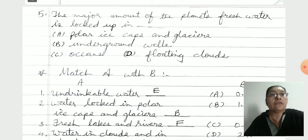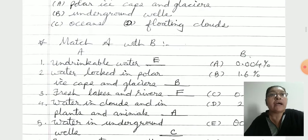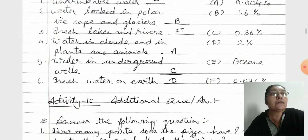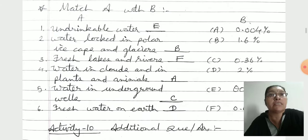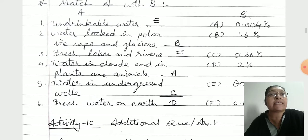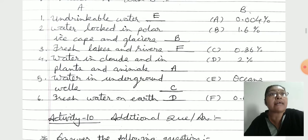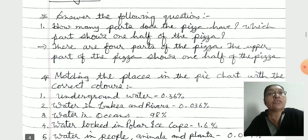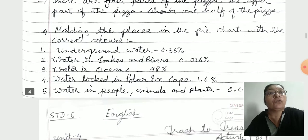Activity 8: Note by heart. Match the following. Undrinkable water — Oceans. Water locked in polar ice caps and glaciers — 1.6. As per the textbook, I have given the match the following here. Additional question answers you have to learn.